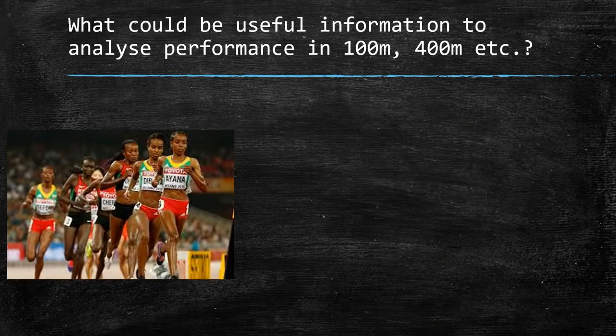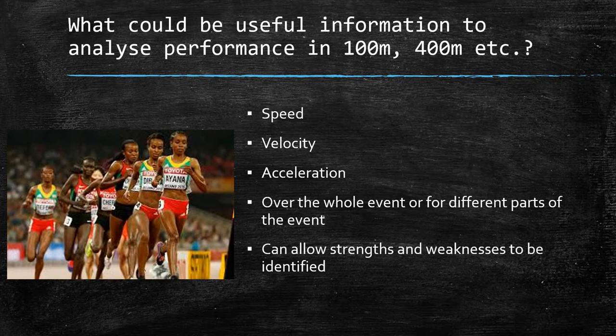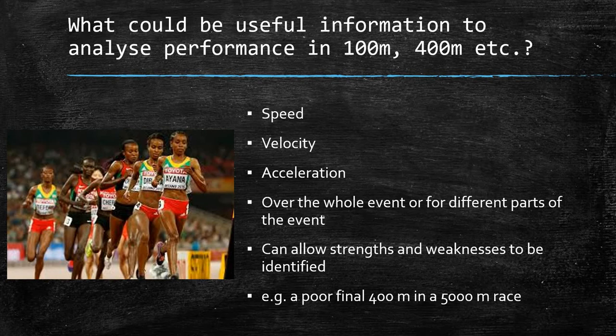What could be useful information to analyse performance in running specifically? We could look at speed, velocity, and acceleration — and we can look at those things over the whole event or for different parts of the event. This can allow us to identify strengths and weaknesses. For example, if a runner has a poor final 400 metres in a 5,000 metre race, once you've identified that, you can do something about it.